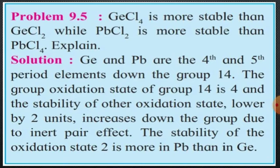Germanium tetrachloride, GeCl4, is more stable than Germanium dichloride, GeCl2. The question states that Germanium tetrachloride is more stable than Germanium dichloride, while lead, Pb, tetrachloride is less stable — meaning it is reverse: lead dichloride is more stable than lead tetrachloride.